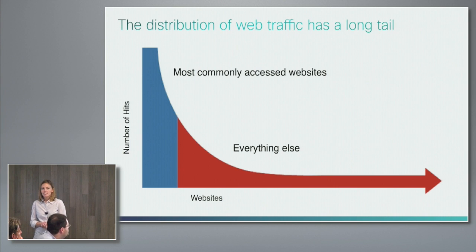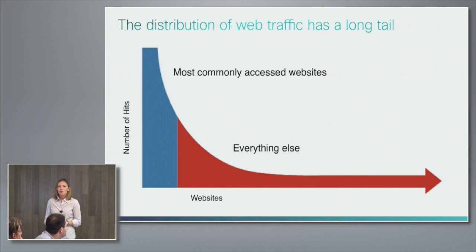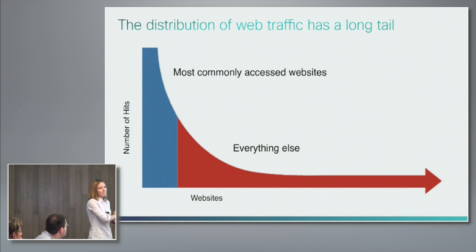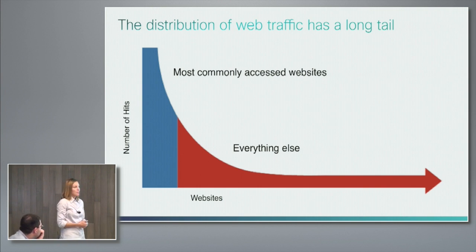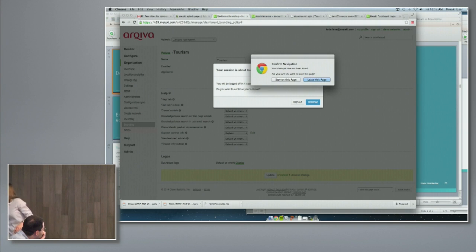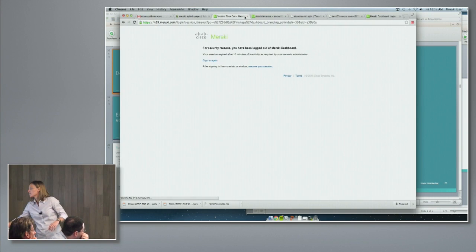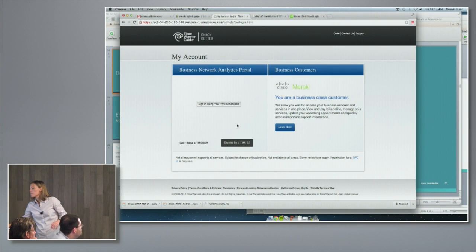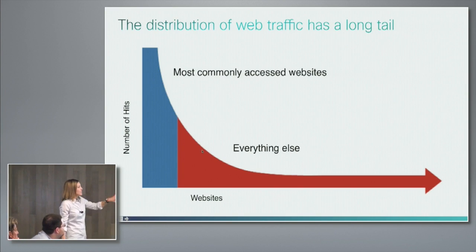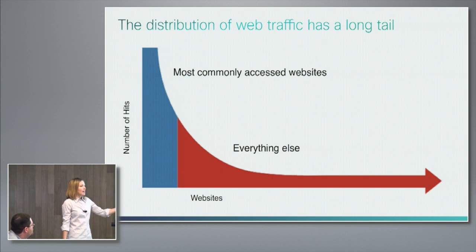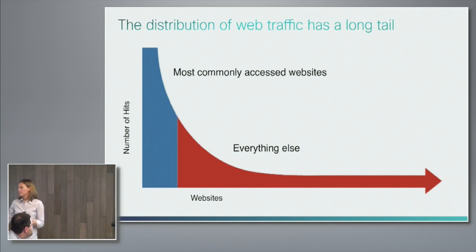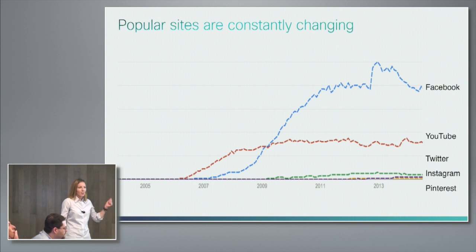There are a few things we thought about when rethinking this. First, taking a step back and looking at what web traffic really looks like — this distribution of websites. On the left we have very commonly accessed websites, and then this huge long tail of websites that aren't accessed as commonly. We have rules for the common ones already, but we don't have rules for this huge long tail of data that's actually very useful — we want to know those other websites too.